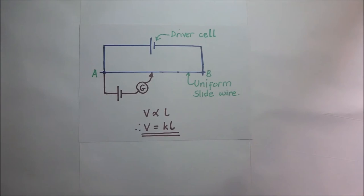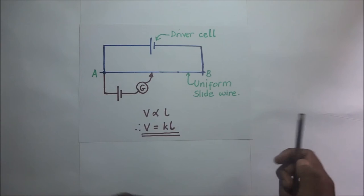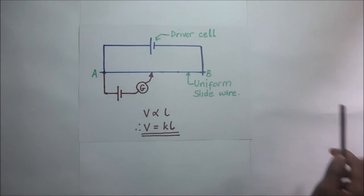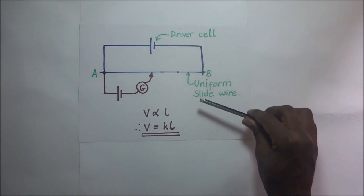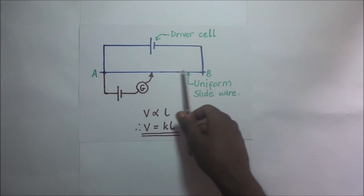A potentiometer consists of a uniform slide wire, and this slide wire can be of any length — it could be 1 meter or more. This potentiometer is connected in series with a driver cell, which maintains a steady current through the wire. Since the wire is uniform, it has a constant resistance per centimeter. This therefore means that the driver cell applies a constant pd per centimeter across the length of the wire.